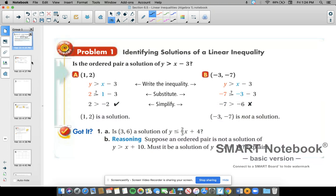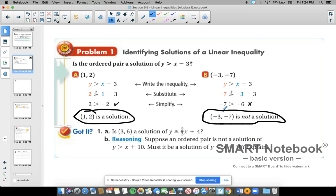If you plug it in and it comes out to be something that is true, it's a solution to the inequality. 1, 3 is a solution to this inequality. And that's the first thing we're going to be doing. They're going to give you points, and you plug them in and say, is it a solution? So 1, 2, plug it in. 2 is greater than negative 2. Yes, that means this is a solution. Negative 3, negative 7, we plug it in. It comes out to negative 7 is greater than negative 6. That is not true. Therefore, this is not a solution.